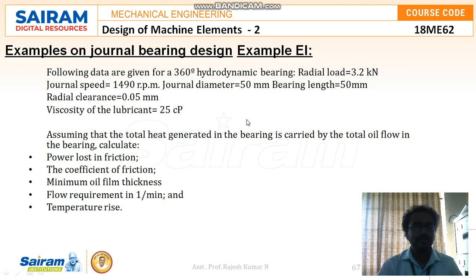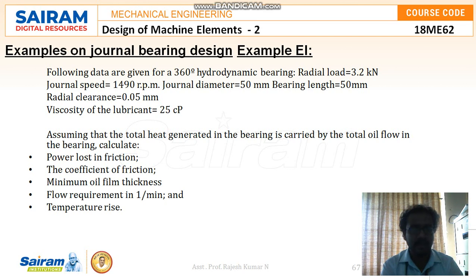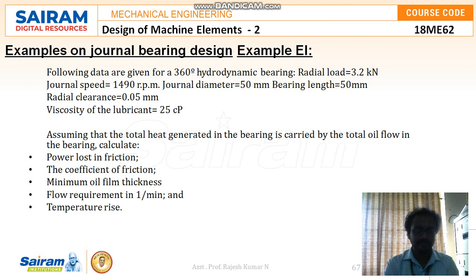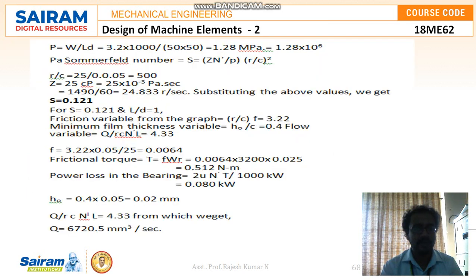Now for a worked example: the following data are given for a 360-degree hydrodynamic journal bearing — radial load 3.2 kN, journal speed 1490 rpm, journal diameter 50 mm, bearing length 50 mm, radial clearance 0.05 mm, and viscosity of lubricant 25 centipoise. Assuming total heat generated is carried by the total oil flow, we need to calculate: power loss in friction, the quotient of friction, minimum oil film thickness, flow requirement in mm³/min, and temperature rise.